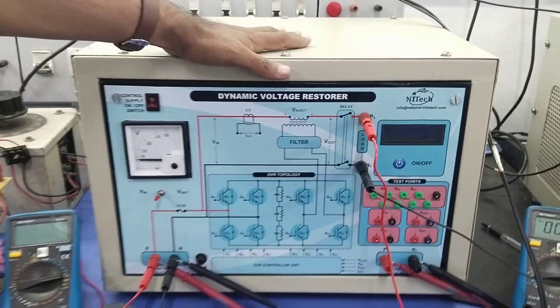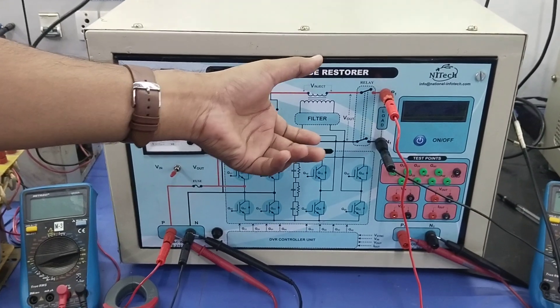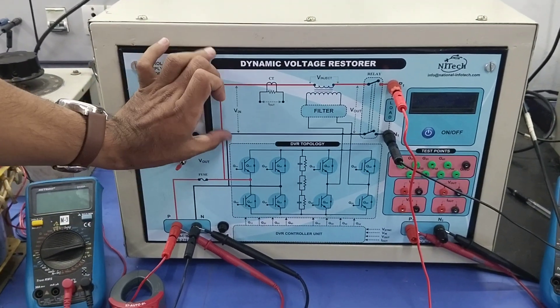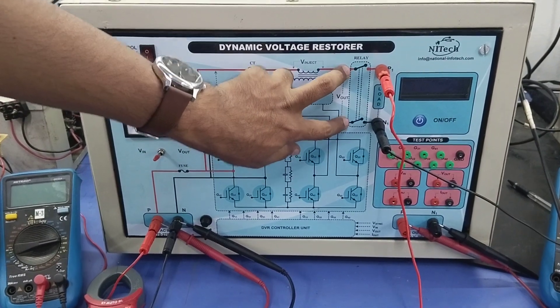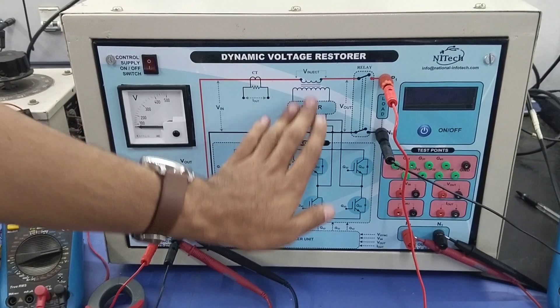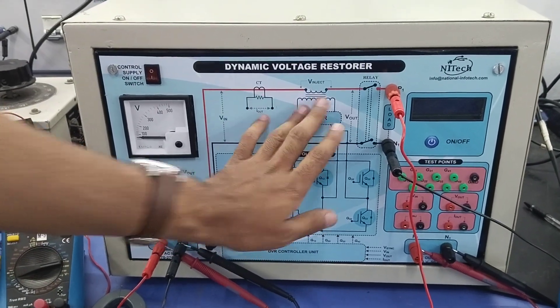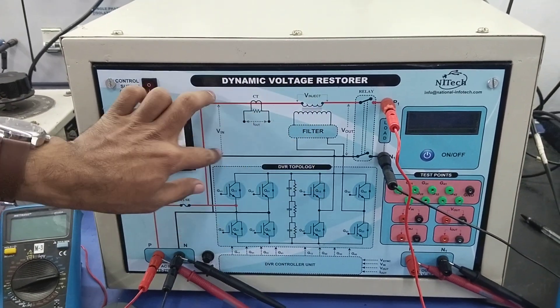Dynamic voltage restorer trainer to observe the performance of voltage control. Here, the AC voltage under variation of AC voltage will have a fixed value of output voltage. To do this, there will be some series injection of voltage. When V_in is less, at that time it injects some voltage in series with V_in.